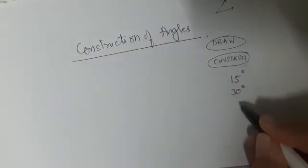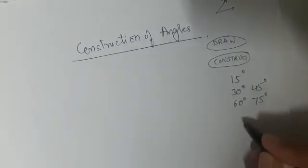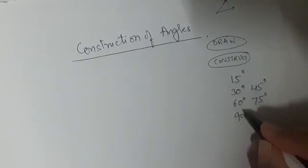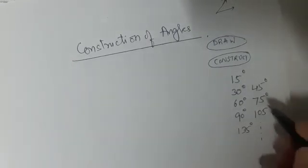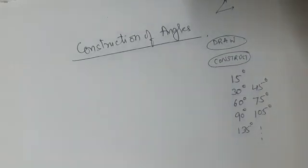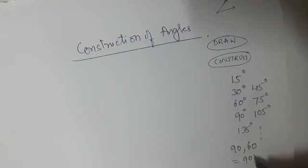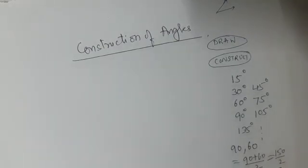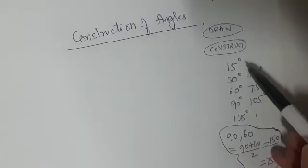We will construct 15°, 30°, 45°, 60°, 75°, 90°, 105°, 135°, and so on. For this we will use some mathematics. You know how to find the average of two numbers — for example, the average of 90 and 60 is 90 plus 60 divided by 2, that is 150 divided by 2, which equals 75. We will use this interesting mathematics in the construction of these angles that are multiples of 15.